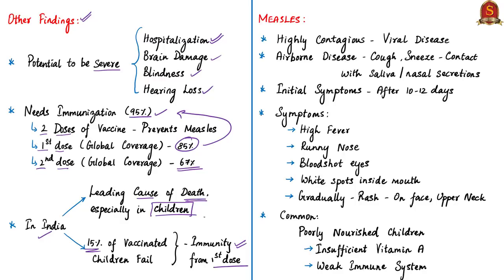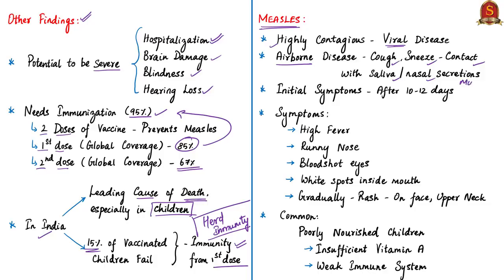Herd immunity is a form of immunity that occurs when the vaccination of a significant portion of the population provides protection for individuals who have not developed immunity. In the context of this article, it is important to know a few facts about measles. Measles is a highly contagious viral disease. It is airborne, transmitted through cough or sneeze or through contact with saliva or nasal secretions. Initial symptoms usually appear 10 to 12 days after infection.